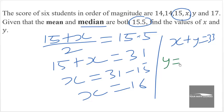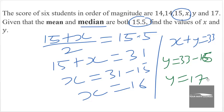Since X is 16, Y equals 33 minus 16, which is 17. So we found X to be 16 and Y to be 17.